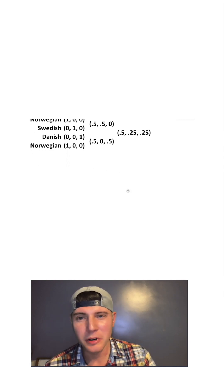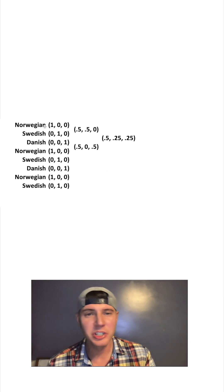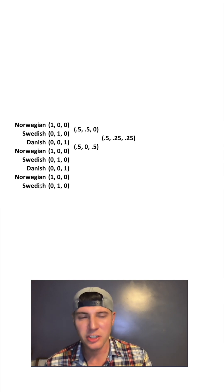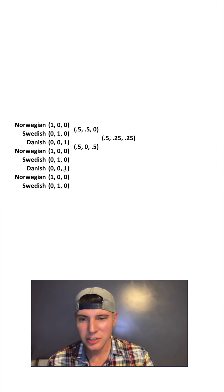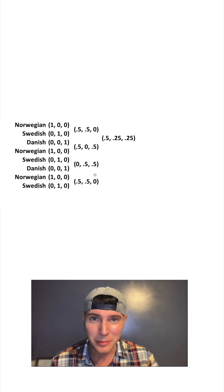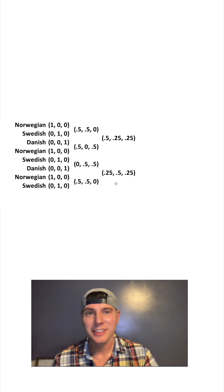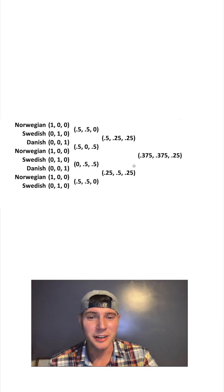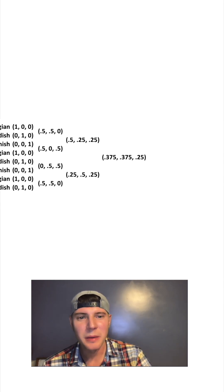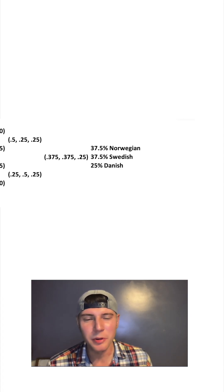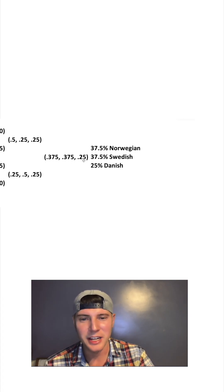Next, let's take these four people and bring in four more, keeping up the pattern: Norwegian, Swedish, Danish, Norwegian, Swedish, Danish, Norwegian, Swedish. We'll have these pairs have babies, those children grow up and have babies, and then those babies grow up and have a baby. Half of 0.5 plus 0.25 is 0.375, and so on. This baby ends up being 37.5% Norwegian, 37.5% Swedish, and 25% Danish — getting closer to 33/33/33.